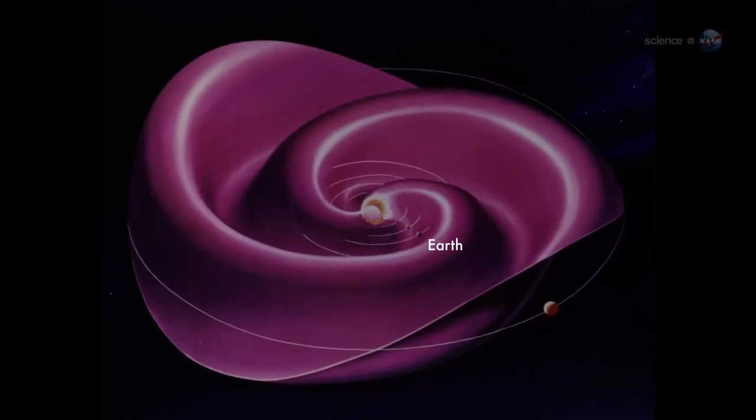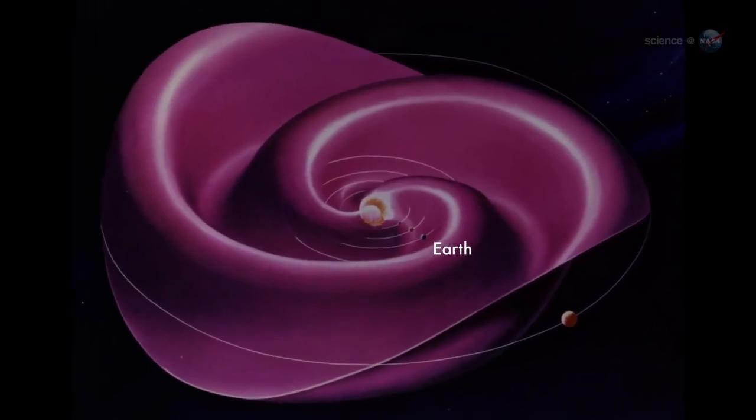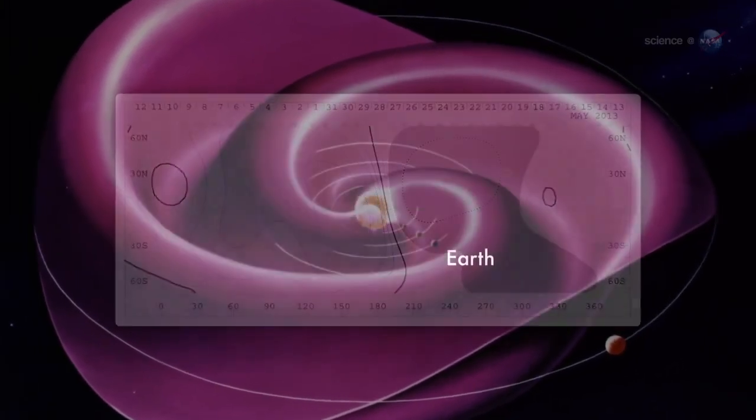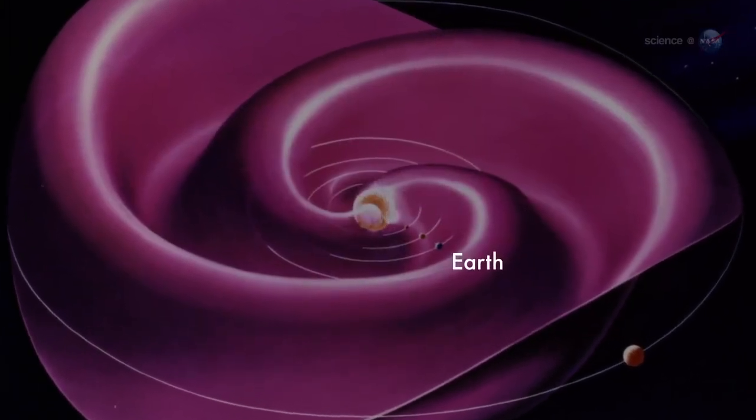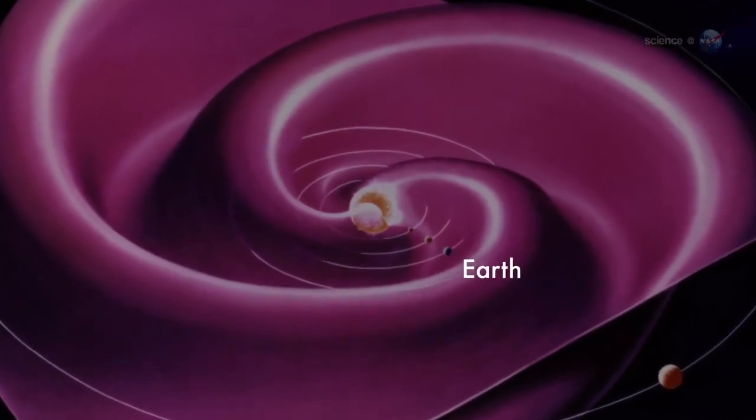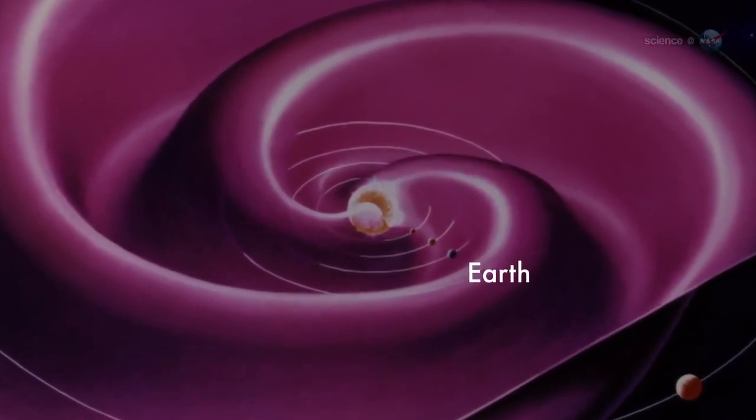During field reversals, the current sheet becomes very wavy. Shearer likens the undulations to the seams on a baseball. As Earth orbits the Sun, we dip in and out of the current sheet. Transitions from one side to another can stir up stormy space weather around our planet.